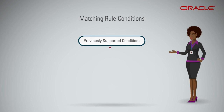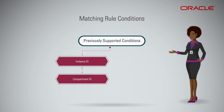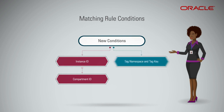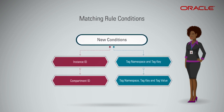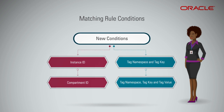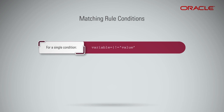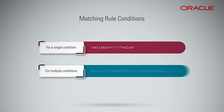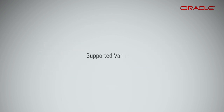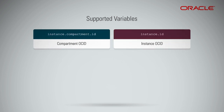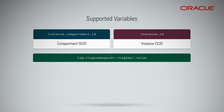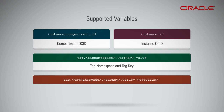The previously supported conditions were Instance ID and Compartment ID. The new condition includes support for tags, where tag namespace and tag key are mandatory, with the optional tag value. The user can use any combination of these old and new matching rule conditions. A matching rule has the following syntax: for a single condition, variable equal to or not equal to value; for multiple conditions, any or all conditions. The syntax for supported variables: Instance.compartment.id — the OCID of the compartment where the instance resides; Instance.id — the OCID of the instance; Tag.tagnamespace.tagkey.value — the tag namespace and tag key.